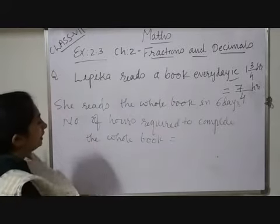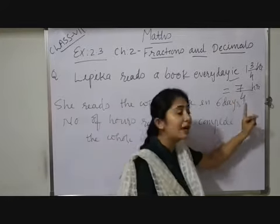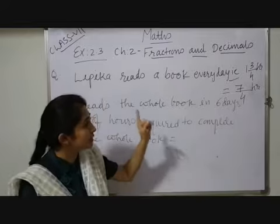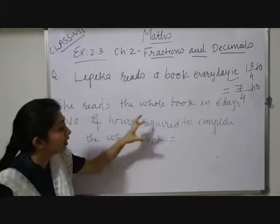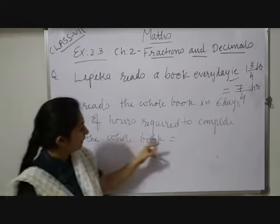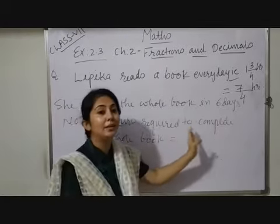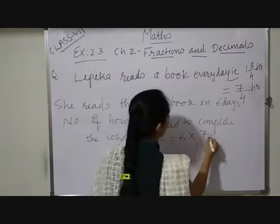Like that here also, daily she is reading, for each day she is reading 7/4 hours. Similarly, this process she is continuing till 6 days. So total number of hours to complete the whole book or to complete the reading of that whole book will be 6 times 7/4.